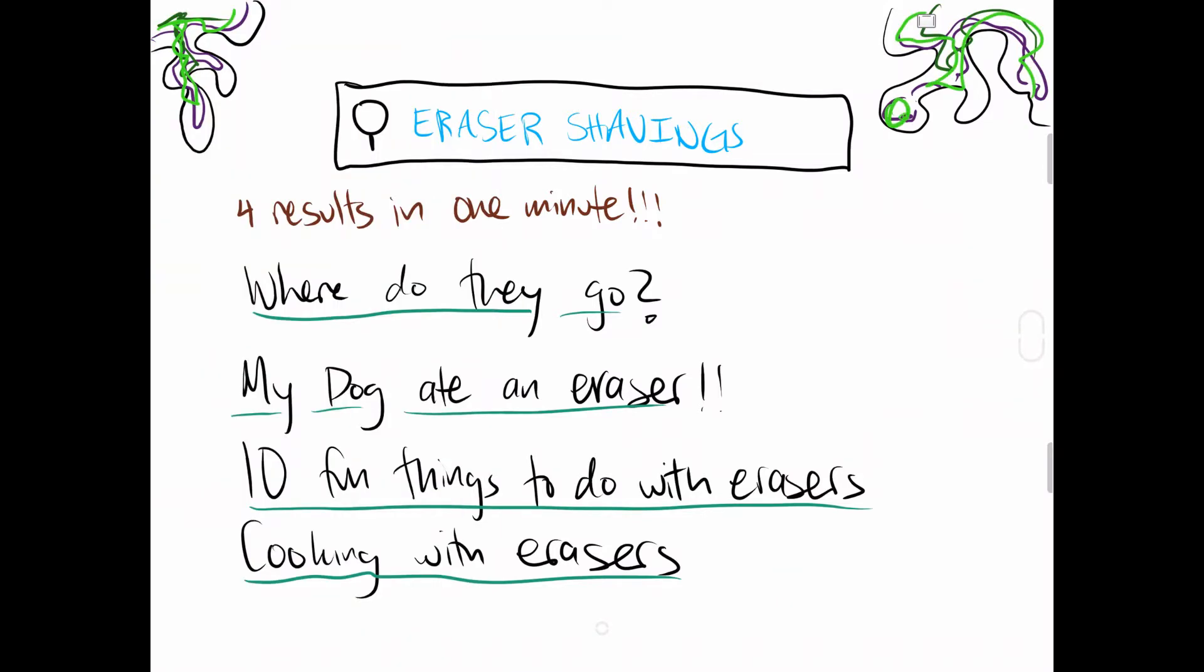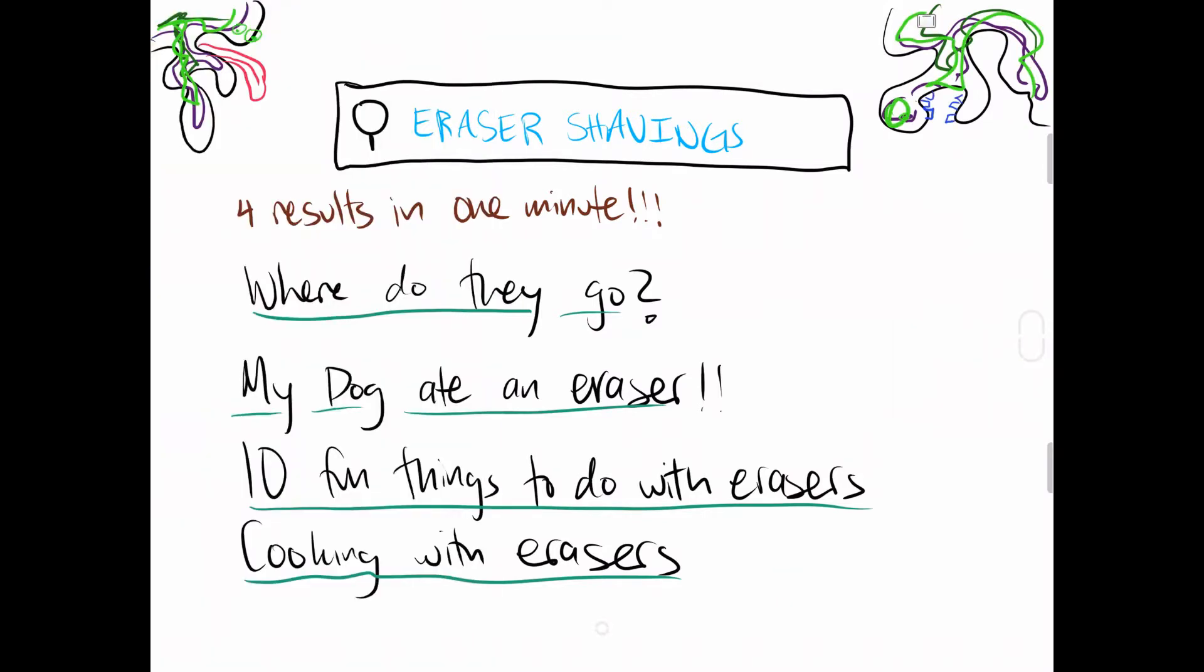Now this top result, where did they go, seems kind of relevant, so that would get a lot of links to it, probably on various pages such as Yahoo, and thus the PageRank algorithm would give it a high value, or a high rank.